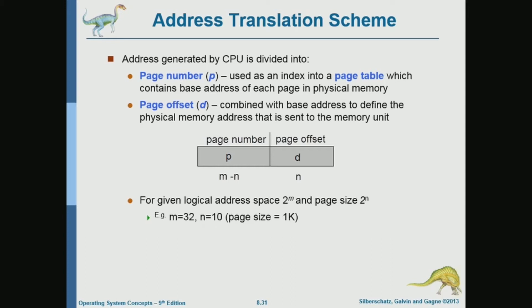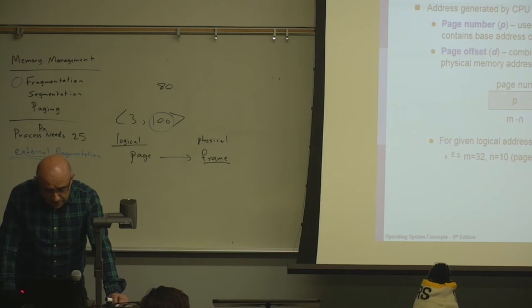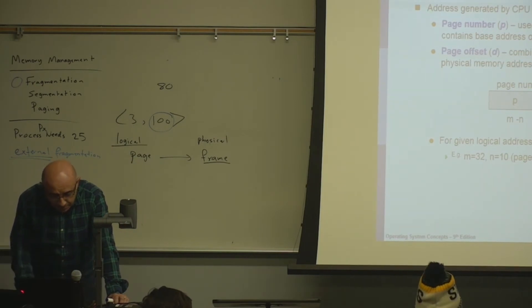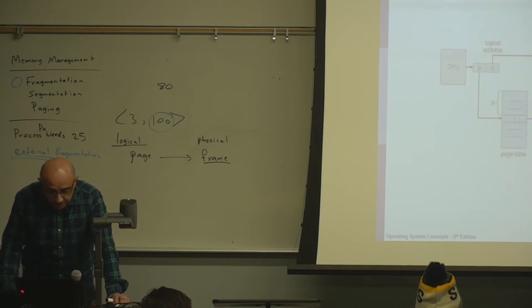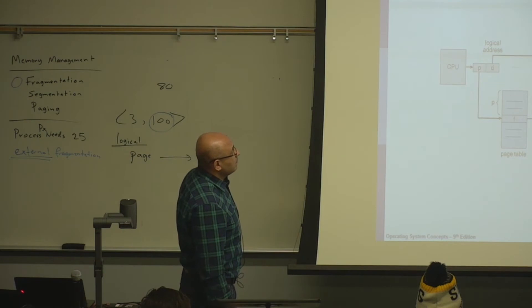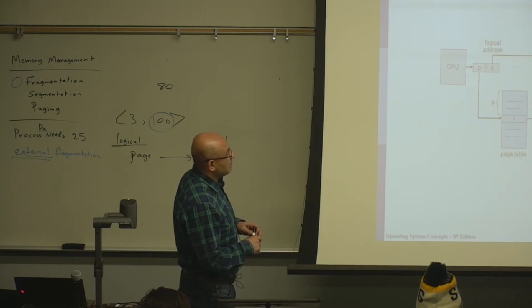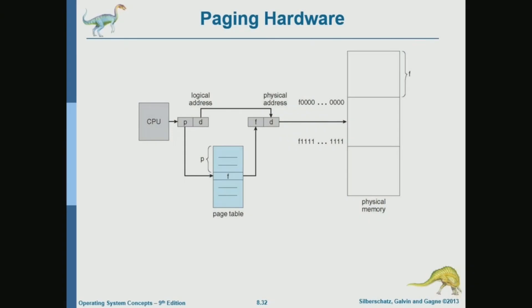The offset will be 10 bits and the remaining 22 bits will be the page number. Just as with segmentation we needed a segment table, with paging we need a page table. The page table takes an address consisting of a page number and a displacement or offset, indexed by the page number, and the entry gives the corresponding frame number. Adding the frame number to the offset gives us the physical address.